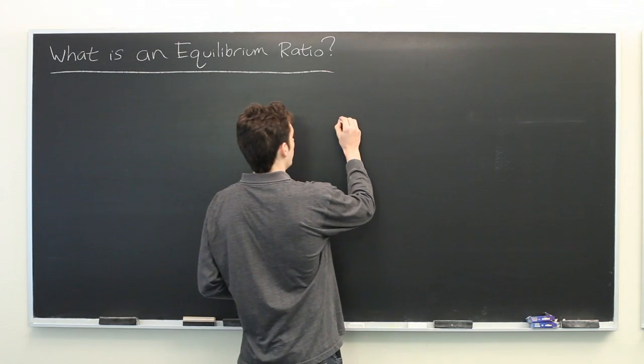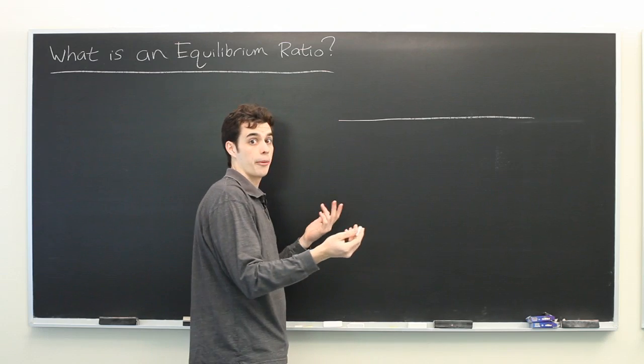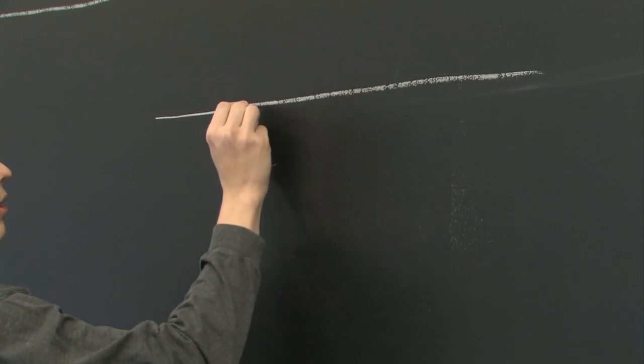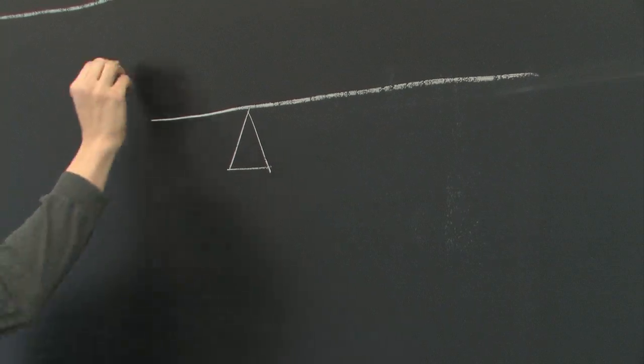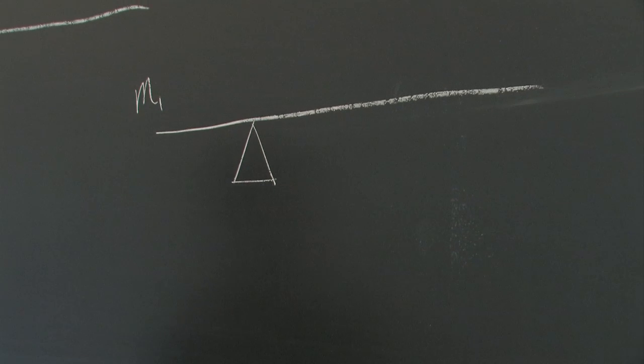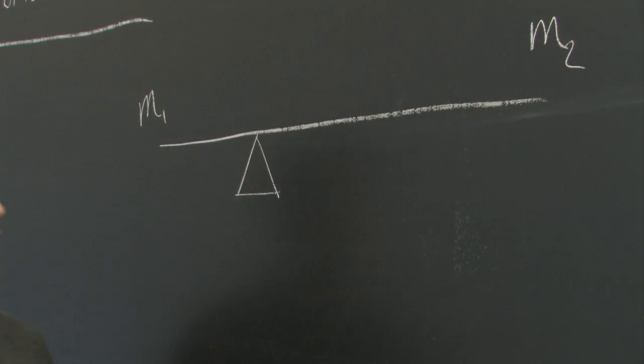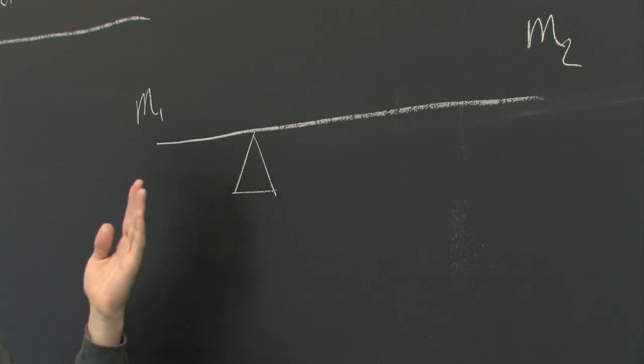So for a very simple example, suppose that you have a seesaw or teeter-totter with a fulcrum somewhere. There's a child on one end with a mass that we'll call M1, a child on the other end with a mass that we'll call M2. And suppose that the fulcrum is not necessary in the center, but can be shifted around.